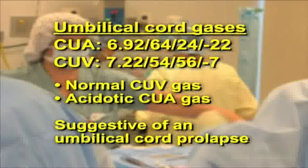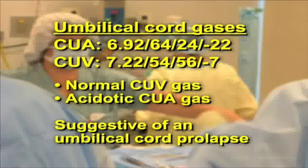The normal cord umbilical venous gas signifying adequacy of maternal and placental oxygenation and the significantly acidotic cord umbilical artery gas evidence of an inadequacy of fetal oxygenation are highly suggestive of an umbilical cord prolapse.